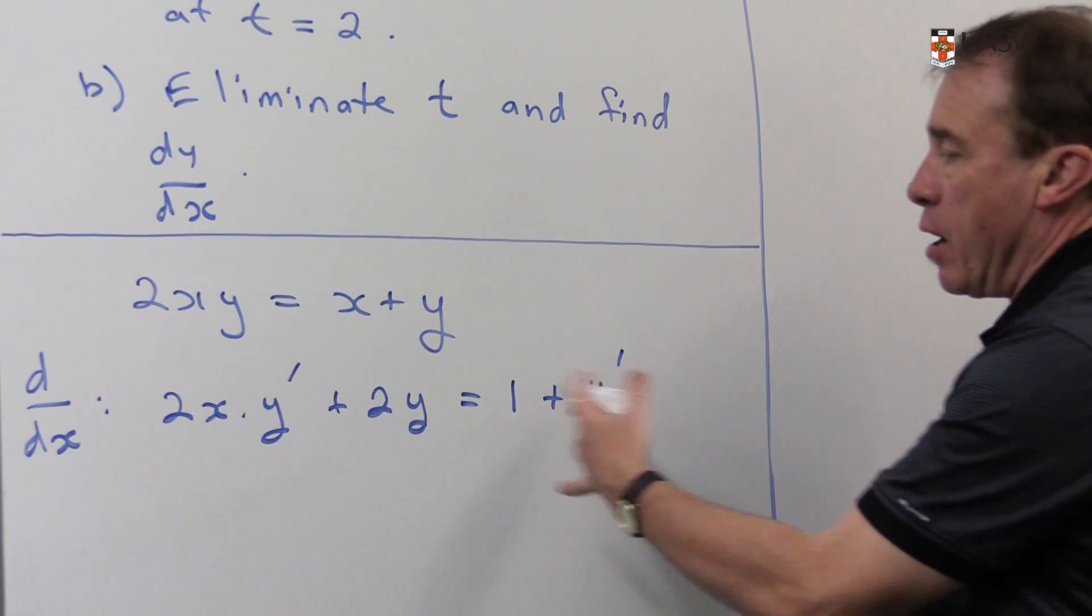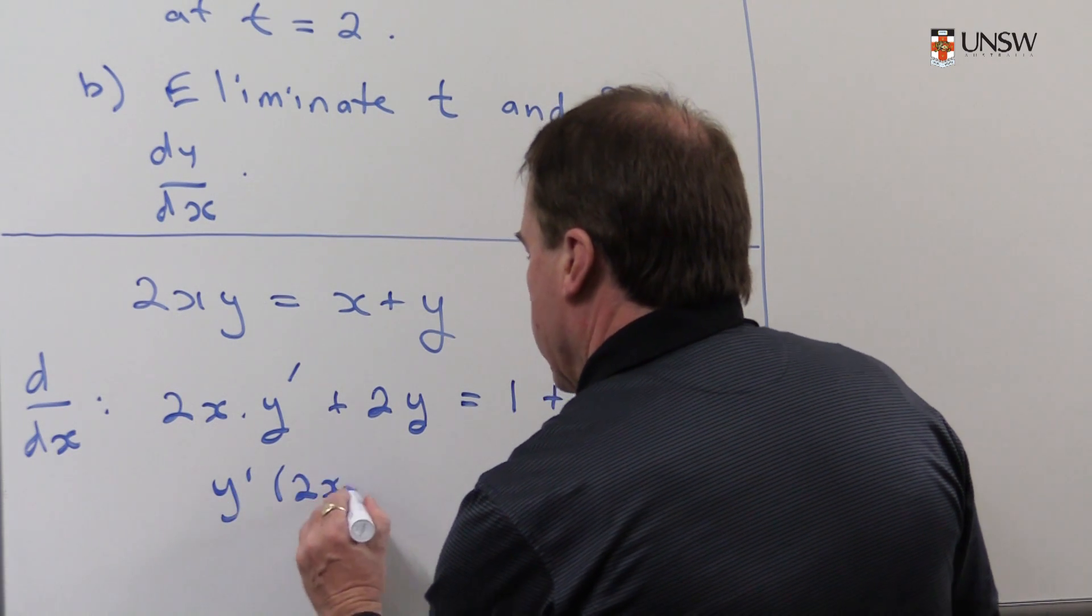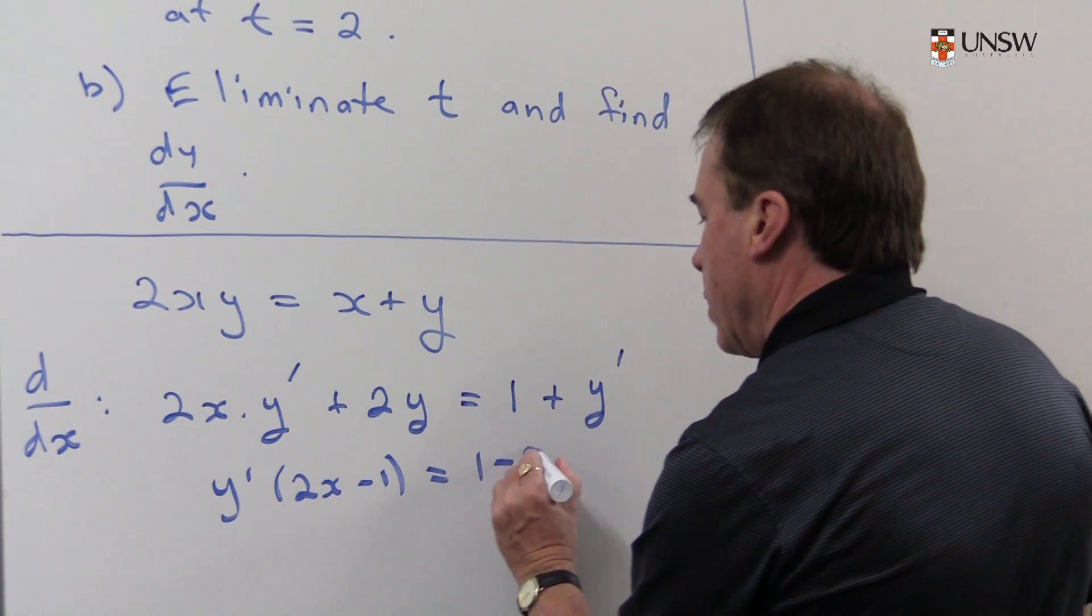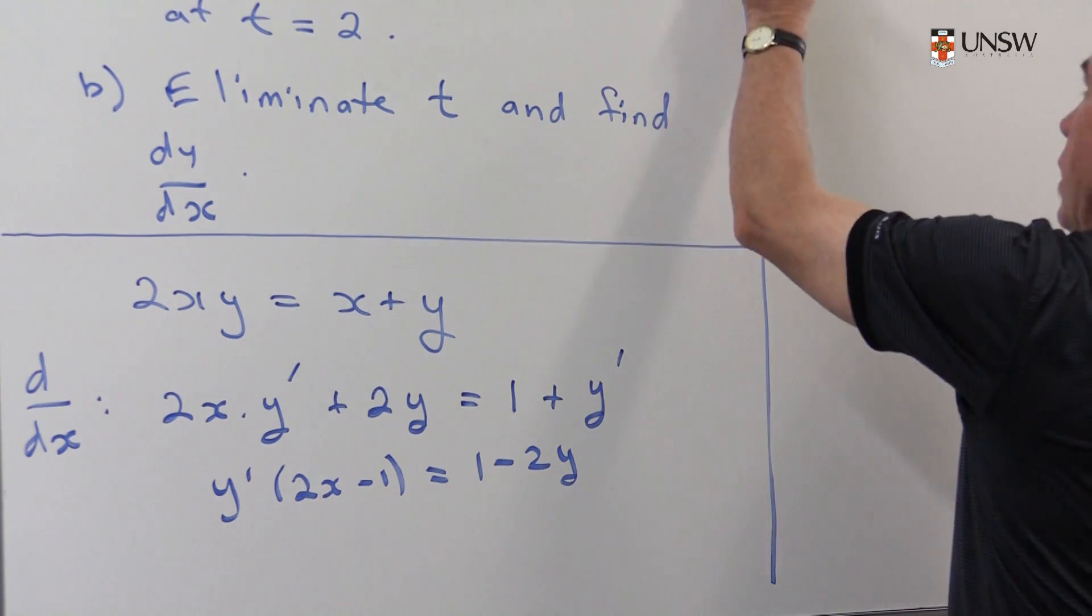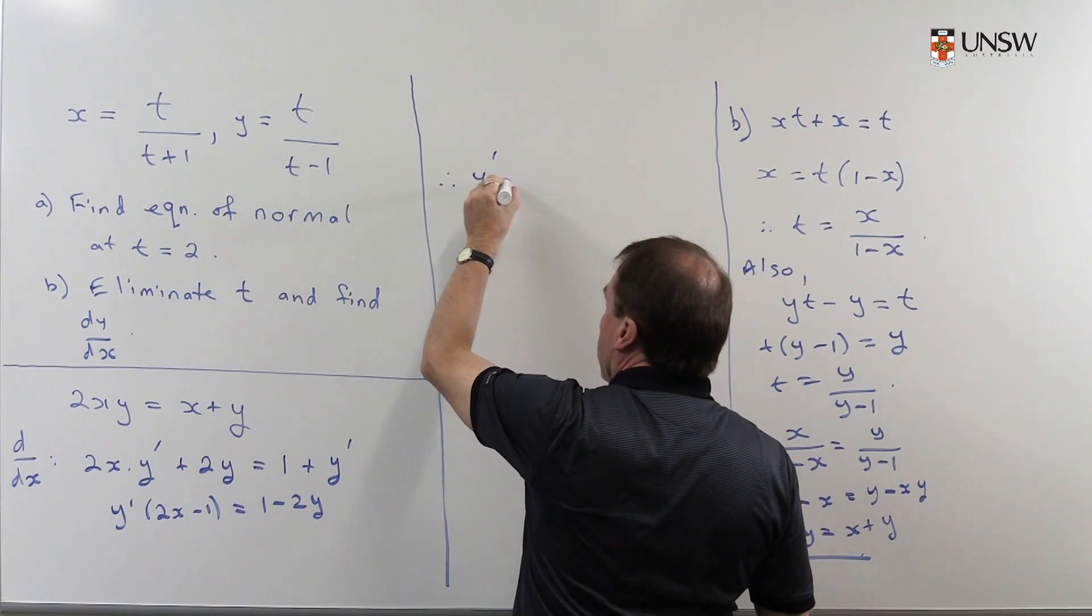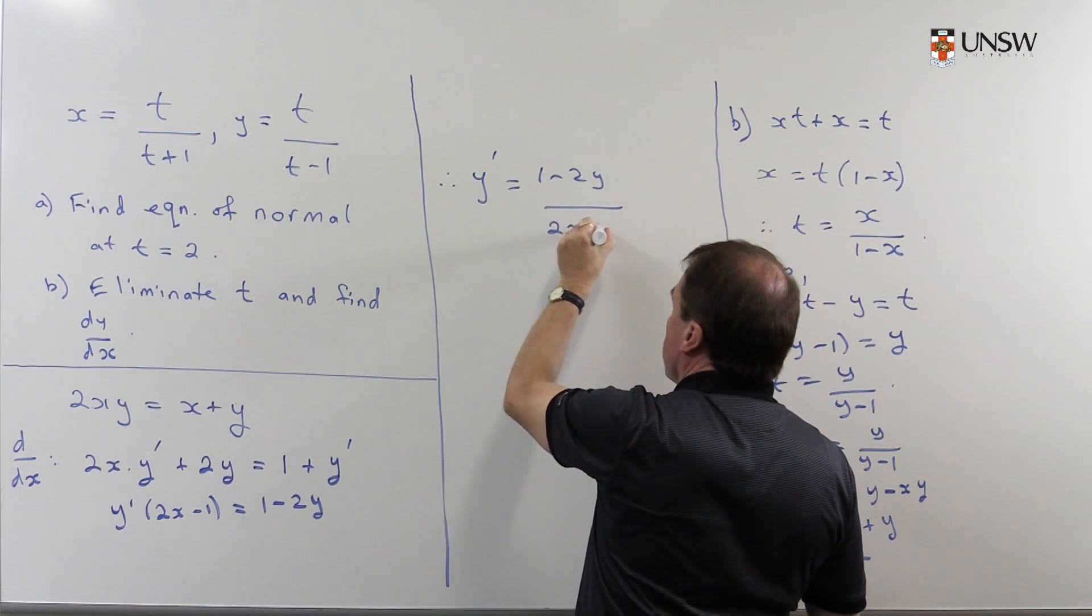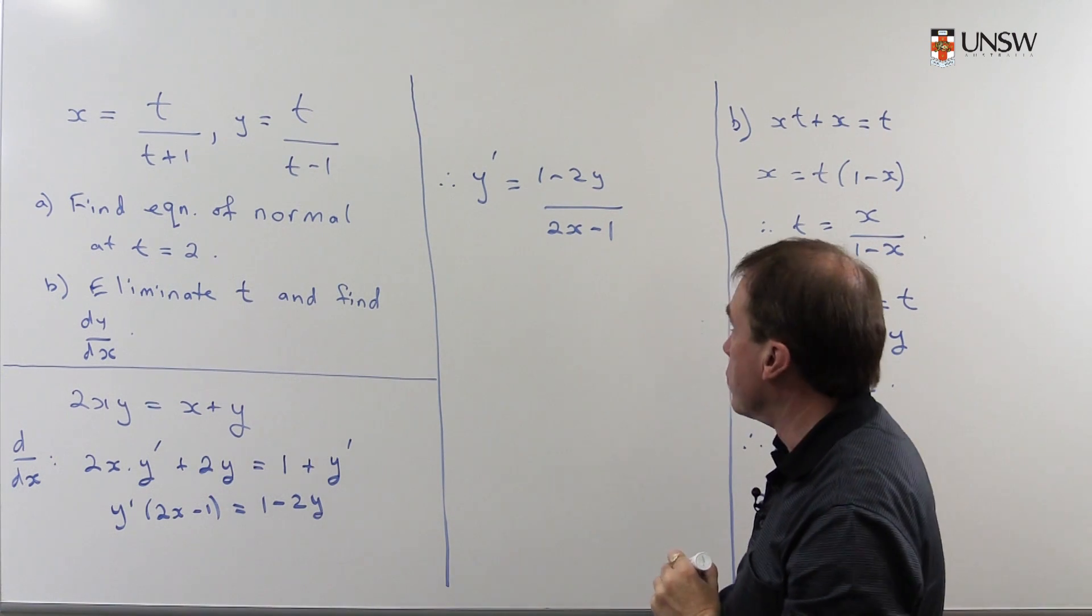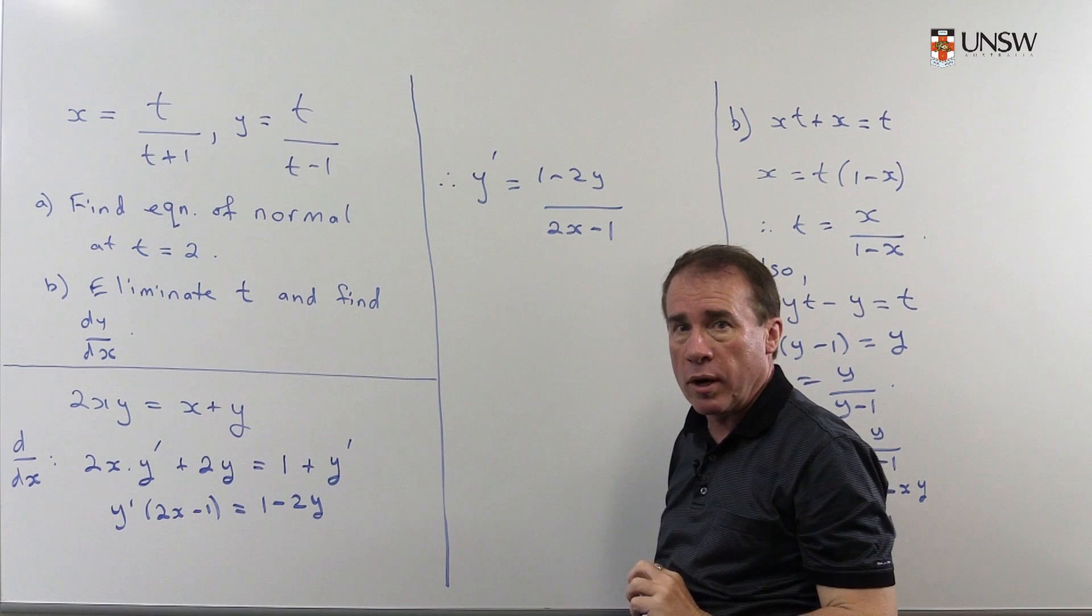So that's 2x minus 1. And take all the other terms on the other side. And therefore I get the derivative, which is equal to (1-2y) over (2x-1). And there's the derivative of the function expressed now in terms of x's and y's.